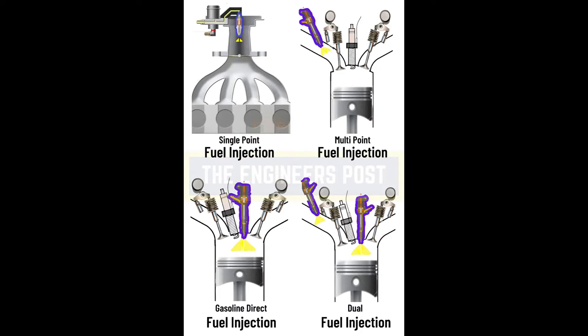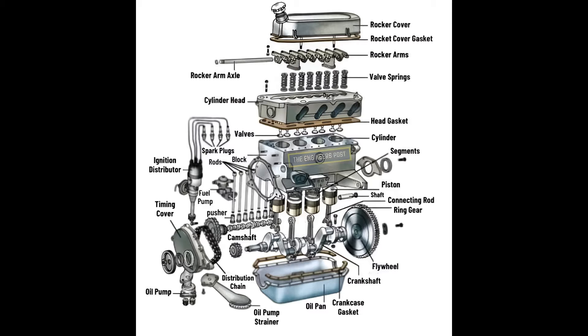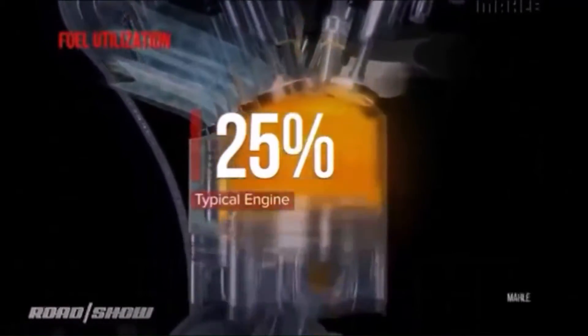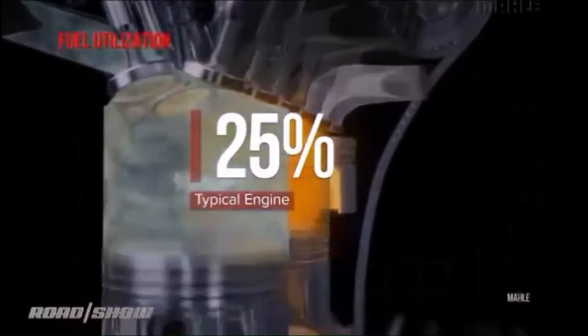Reed valves. Typically found in two-stroke engines and small engines. Reed valves are thin metal or composite strips that open or close based on pressure differences, allowing air-fuel mixtures to flow in one direction.